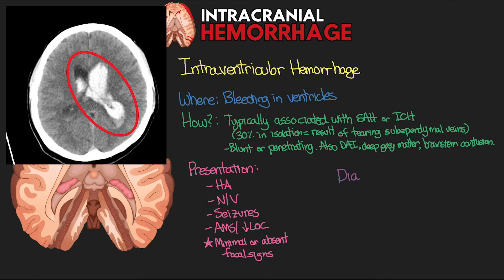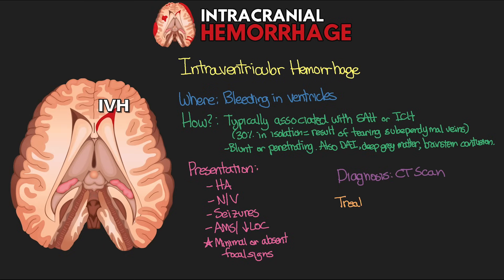Diagnosis is by CT scan, where you'll see blood in the ventricles. As for treatment, there is usually no surgical intervention. We can use an EVD to reduce and relieve pressures, as well as treating the patient's ICPs with the goal of reducing secondary brain injury.